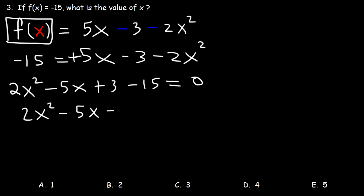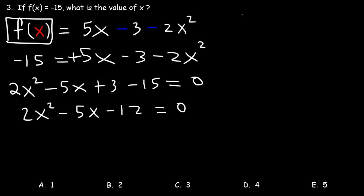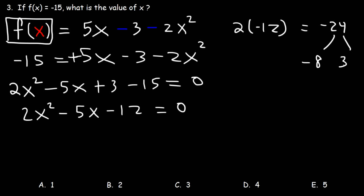3 minus 15 is negative 12. So now we need to factor. We have a trinomial where the leading coefficient is not 1, so we need to multiply the leading coefficient by the constant term. 2 times negative 12 is negative 24. Two numbers that multiply to negative 24 but add to the middle coefficient negative 5: that's negative 8 and 3. So let's replace the middle term, negative 5x, with negative 8x plus 3x. And then we can factor by grouping.